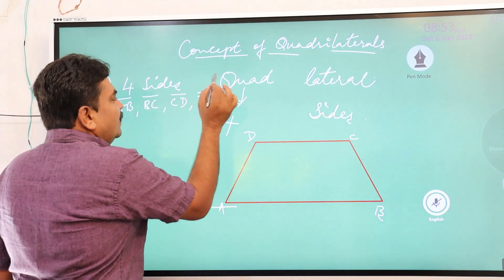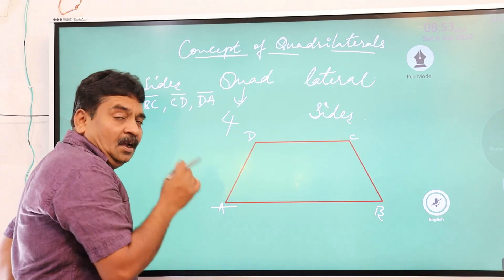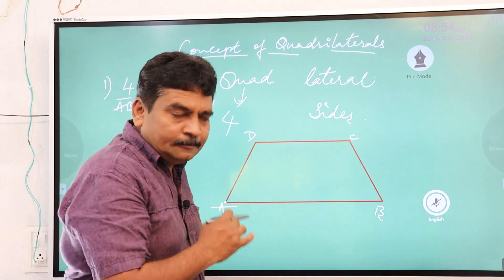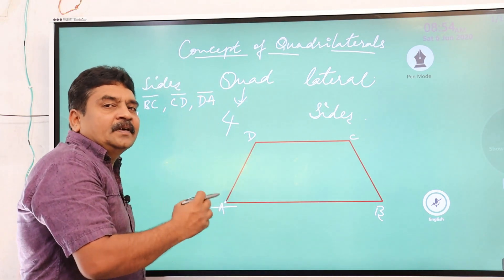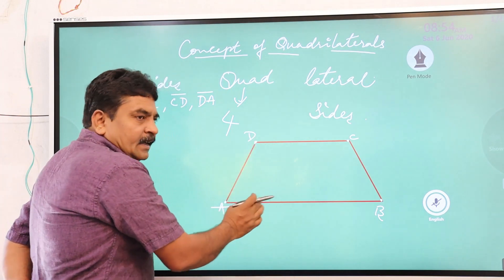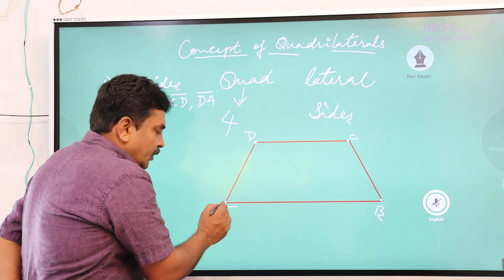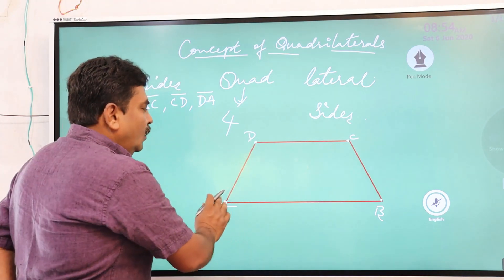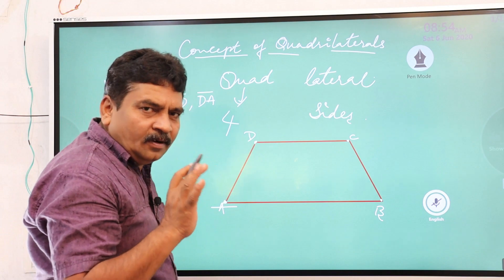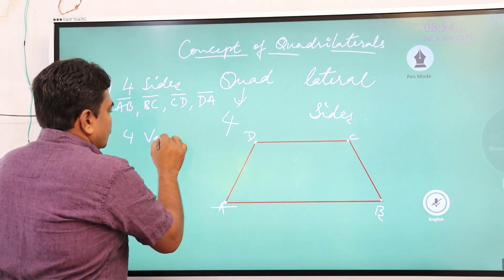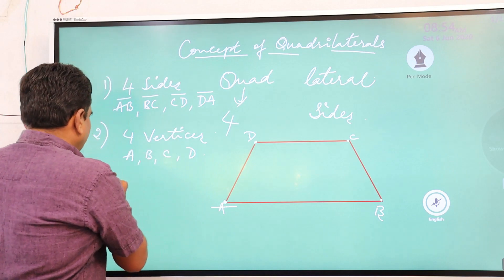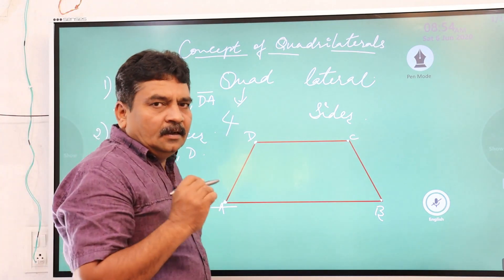So we can write the four sides as AB, BC, CD, and DA. The second property is that it has four vertices. The point where two sides join is called a vertex; the plural form is vertices. For example, lines AB and AD join at point A — that point is called a vertex. So a quadrilateral has four vertices: A, B, C, and D.